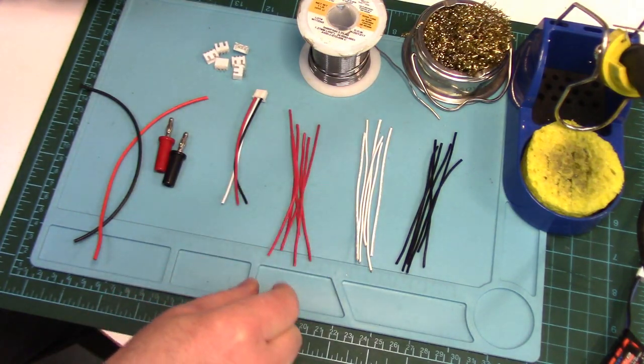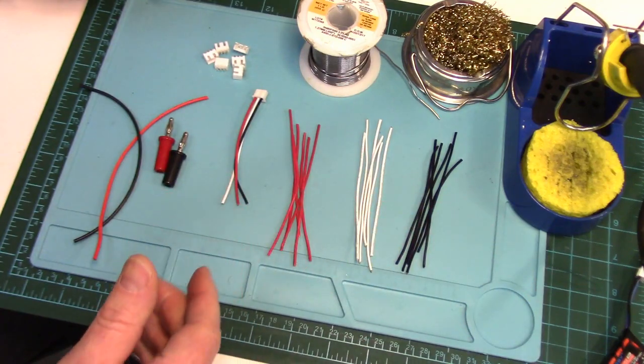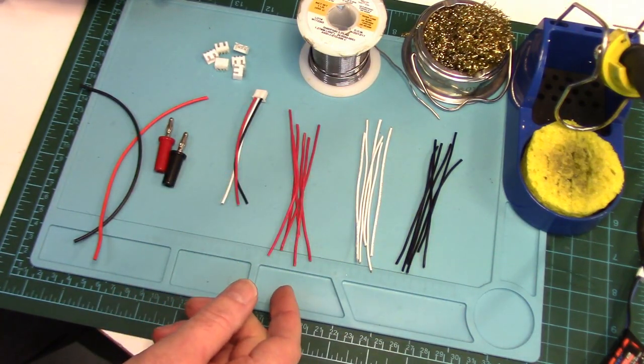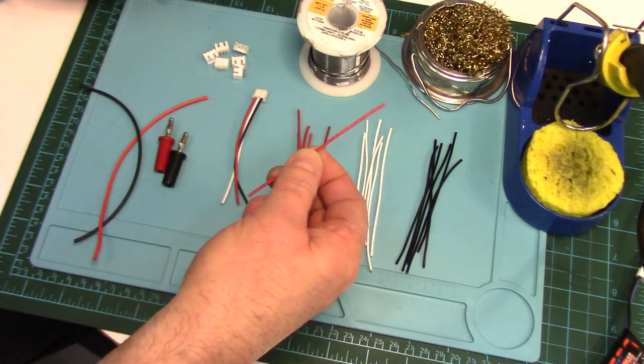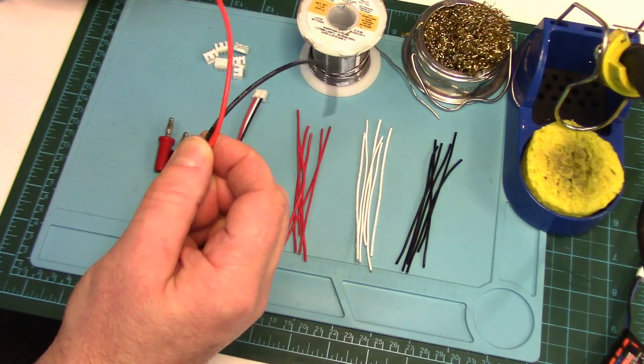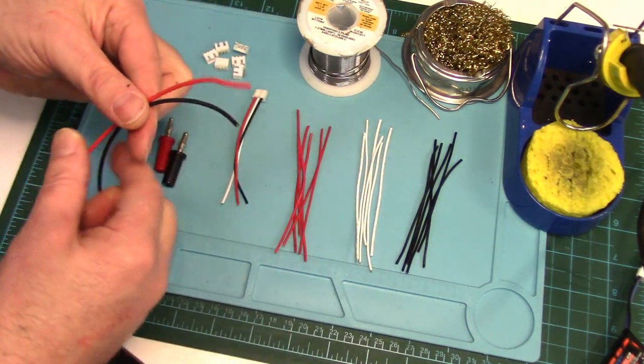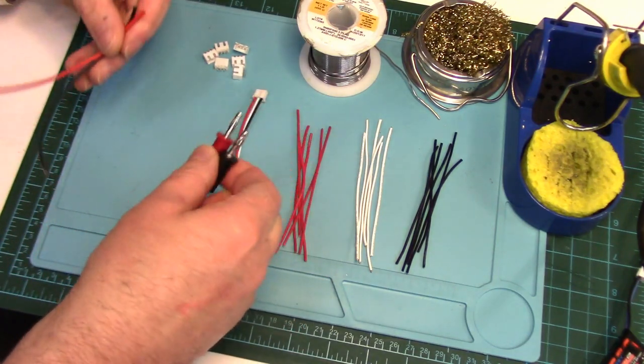You're going to need one female JST-XH connector for your balance plug in your charger. You're gonna need six, 18 wires, six of each color. You don't have to have them color separated. Just helps, of course, to identify them. This is just 22 gauge wire. That's what most balance wiring is. And then I've just got some 18 gauge silicone wire here for the power leads and then two banana plugs.